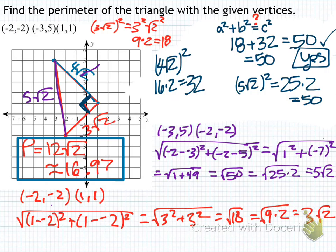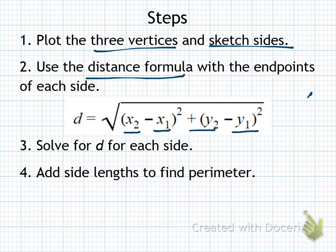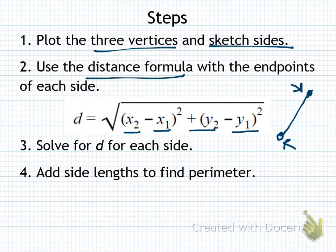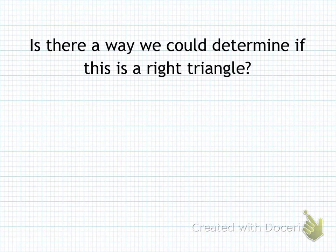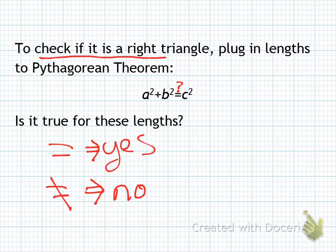To summarize the steps for finding the perimeter: first, plot the three vertices and sketch the sides. Then use the distance formula with the endpoints of each side as x1, y1 and x2, y2. Solve for d for each side, then add the side lengths to find the perimeter. You can use a calculator to get a decimal approximation when square roots can't be combined. To check if it's a right triangle, use the Pythagorean theorem: if a squared plus b squared equals c squared, it is a right triangle; if not, it isn't.